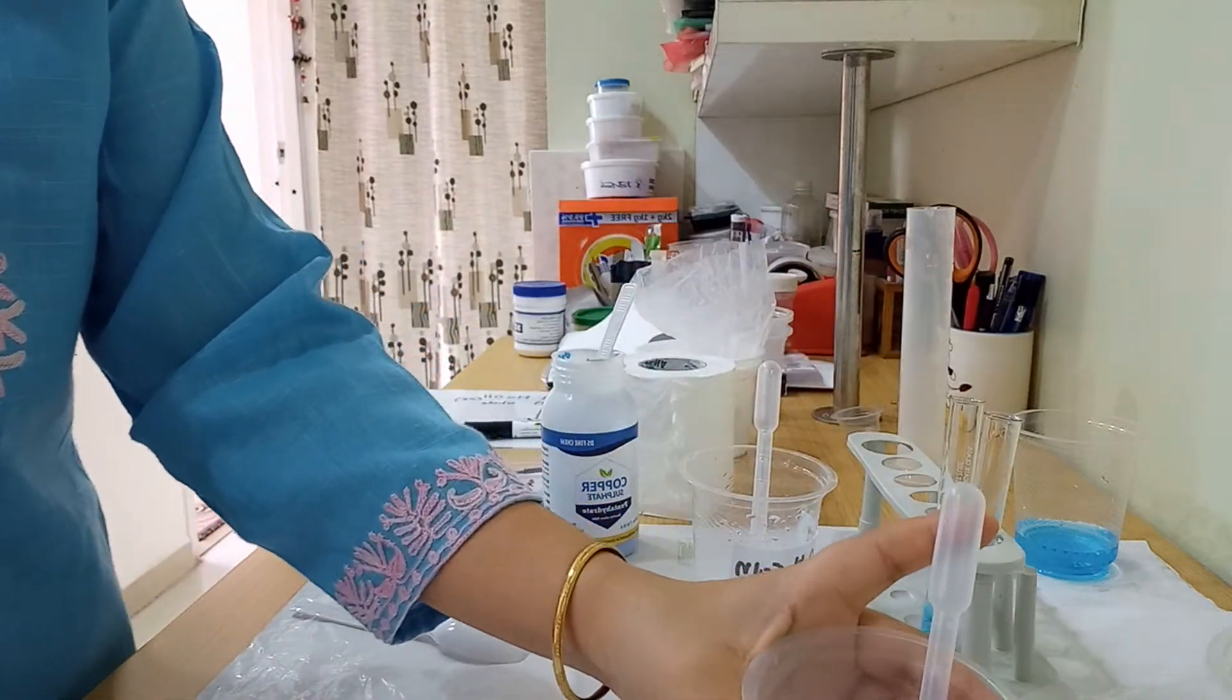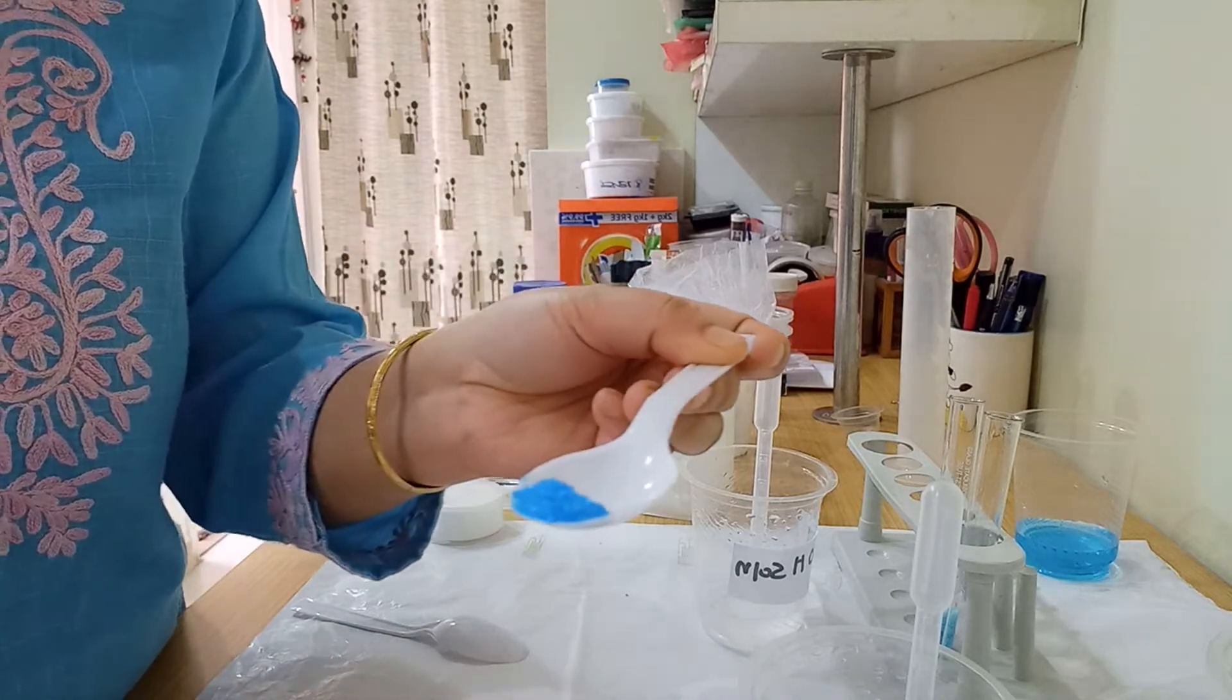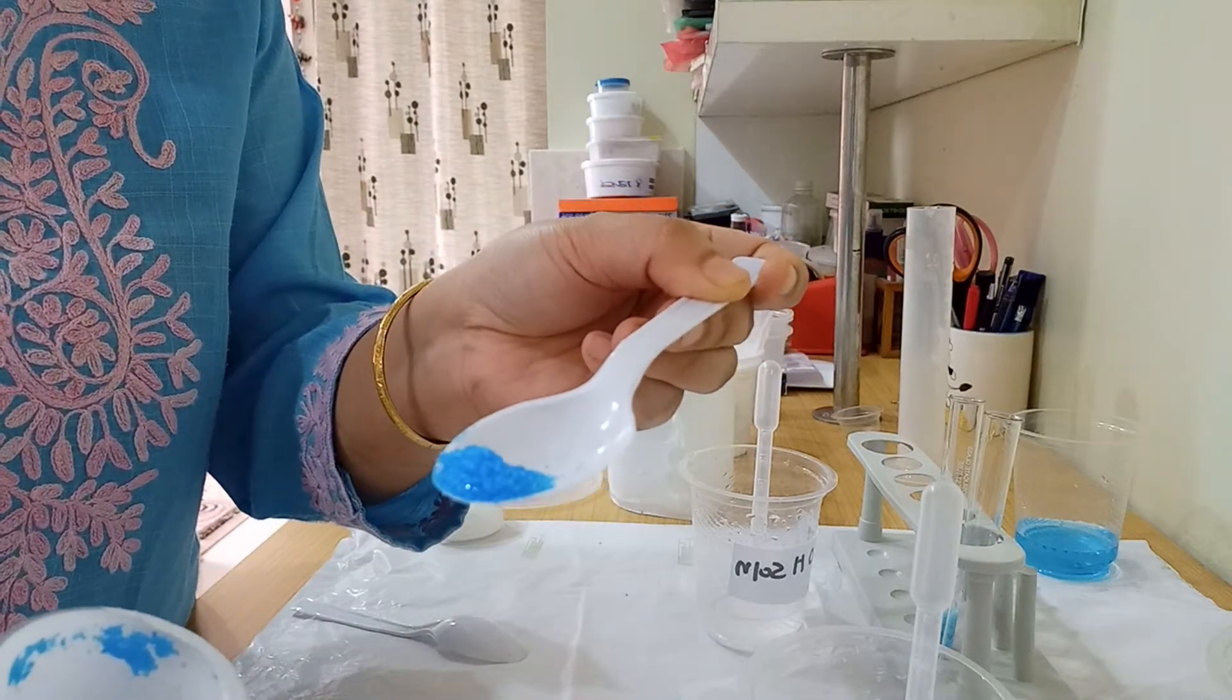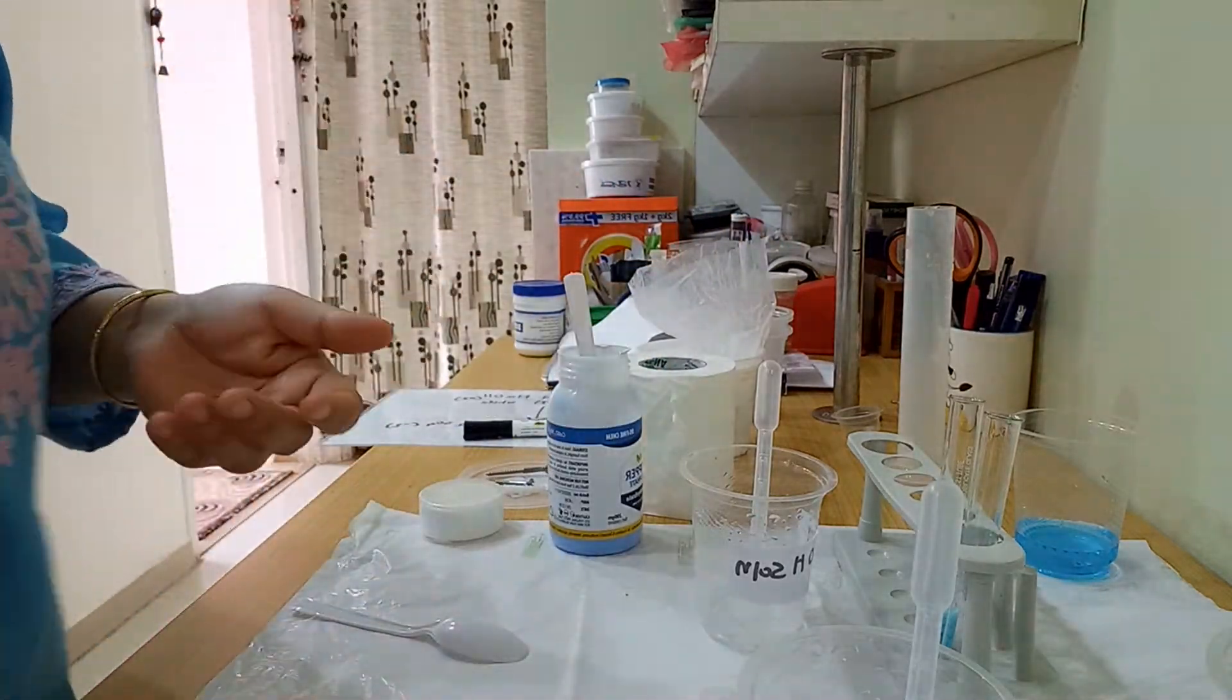I can show you how the copper sulfate looks. You can see here the copper sulfate is a blue crystalline solid. Now I'm going to show you a simple experiment.